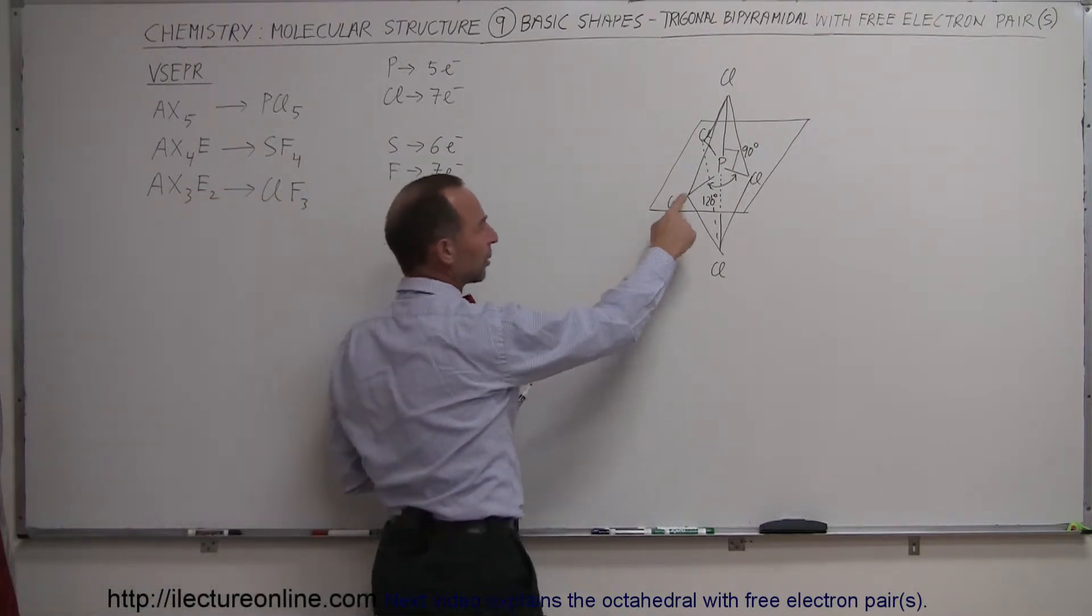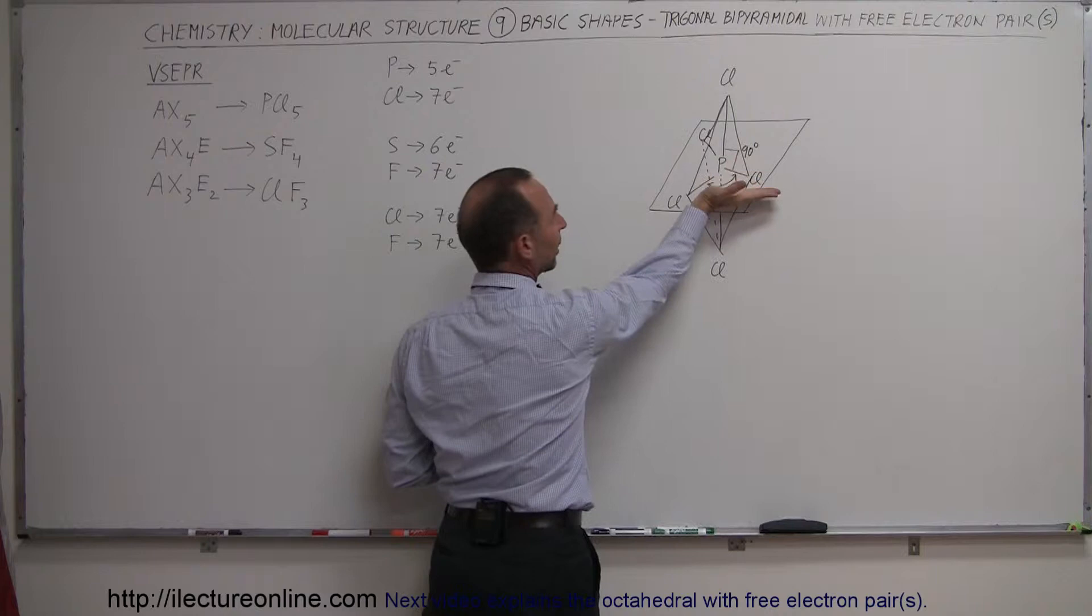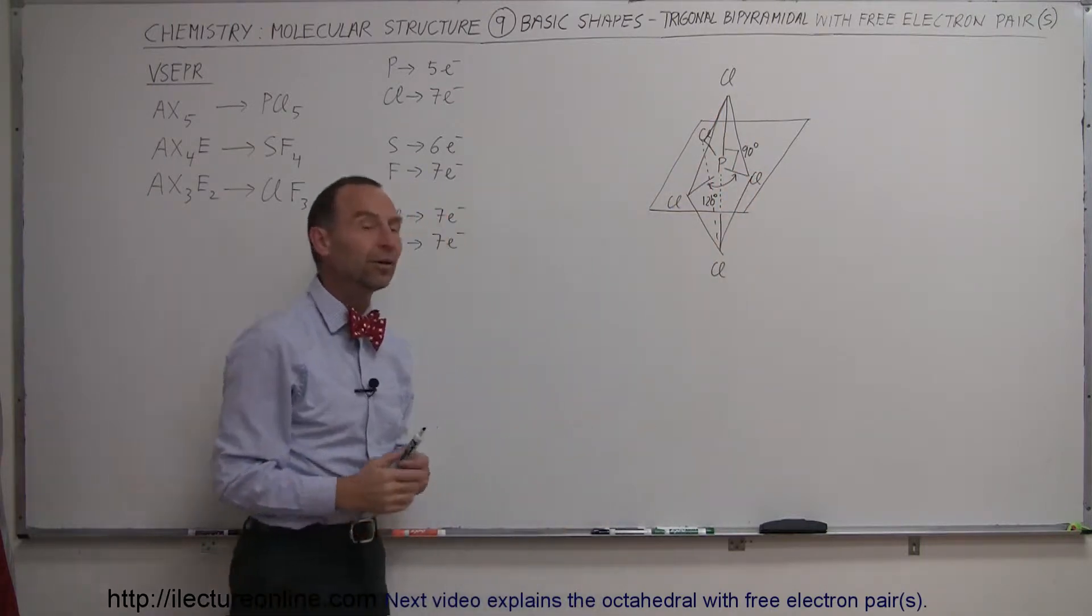Now notice the bond angles between the chlorines in the plane are 120 degrees each. The bond angles between the plane, of course, the atom up, straight up, and the atom straight down is 90 degrees in both directions.